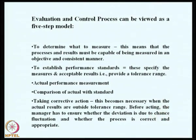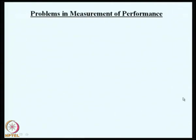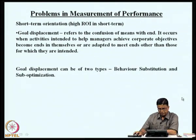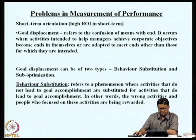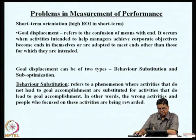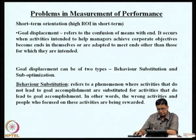Before acting, the manager has to ensure whether the deviation is due to chance fluctuation and whether the process is correct or appropriate. We also looked at the problems which can come in measurement of performance. Goal displacement could be one, due to short-term orientation, because insistence on high ROI in the short term can result in goal displacement — that is, the confusion of means with the end. This occurs when activities intended to help managers achieve corporate objectives become ends in themselves or are adapted to meet ends other than those for which they are intended.